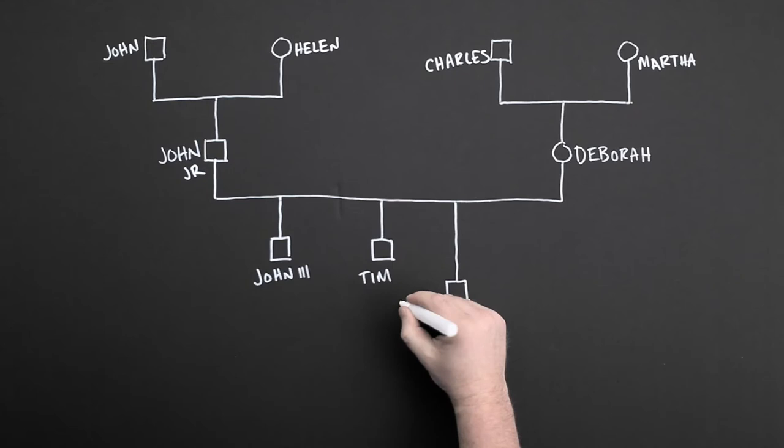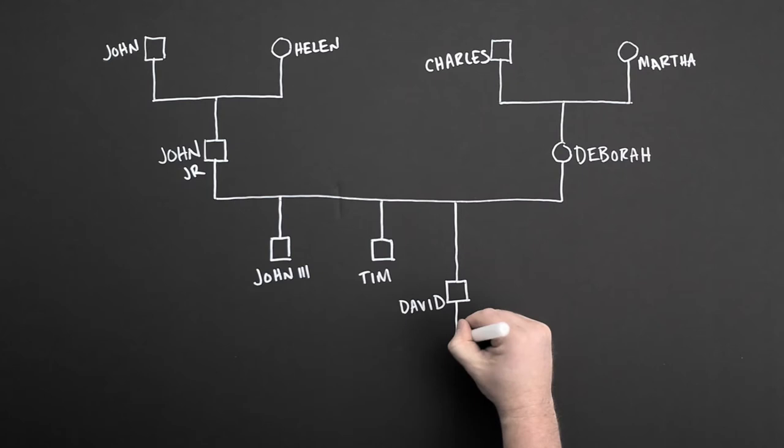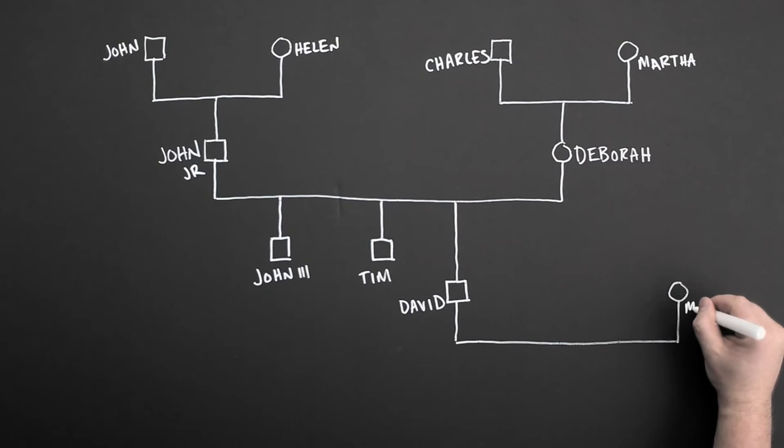Now we have three generations. If you're married, draw a line from your name and write the name of your spouse. If you have children, write those names in as well.